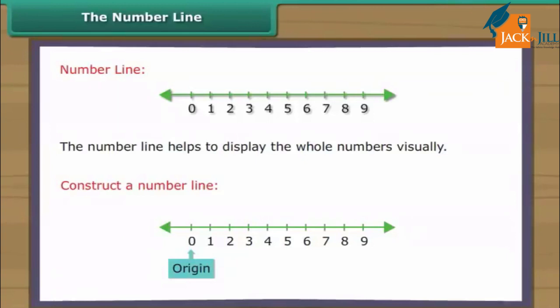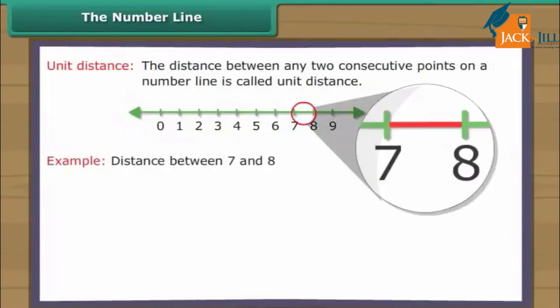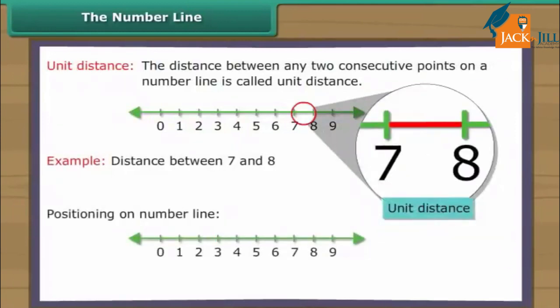We label each new interval endpoint with the next whole number. The distance between any two consecutive points on a number line is called unit distance. Out of two whole numbers, the greater number comes on the right of the other number on the number line.